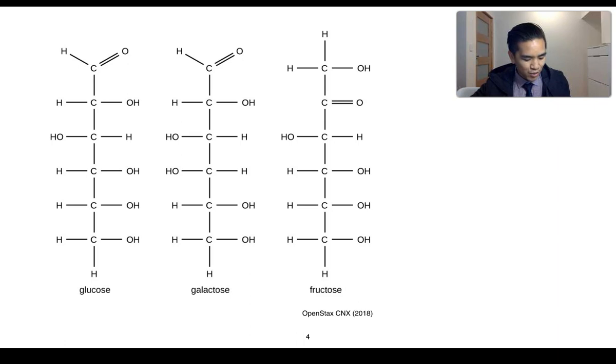So firstly with glucose, what we can see is it's a polyhydroxyaldehyde. It's got an aldehyde functional group up here and it has many hydroxyl functional groups. Galactose is very similar, but you can see that the positioning of these hydroxyl groups is slightly different, but it is also a polyhydroxyaldehyde. And fructose is defined as a polyhydroxyketone with many hydroxyl groups.